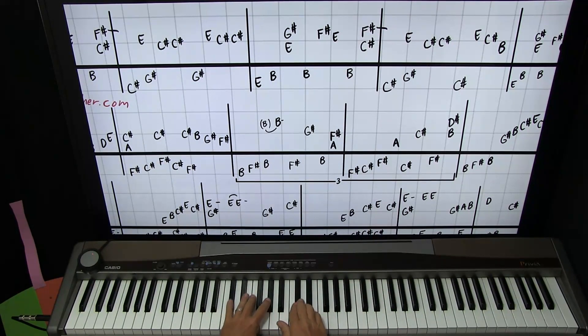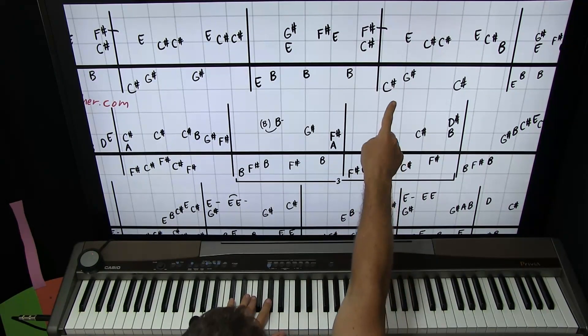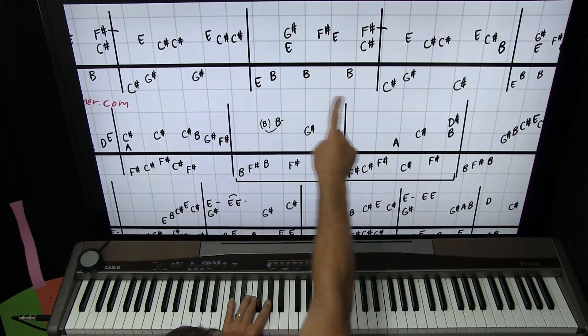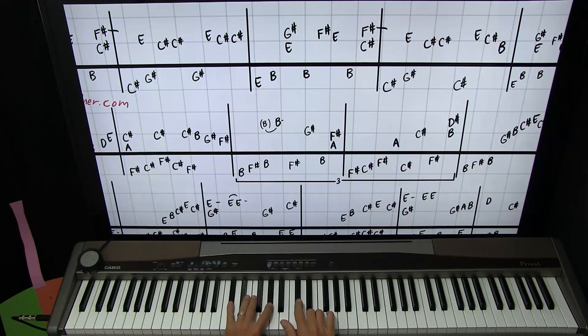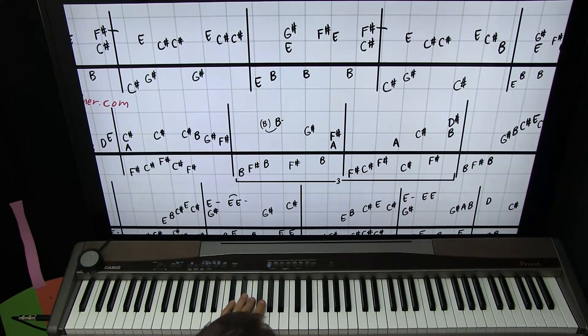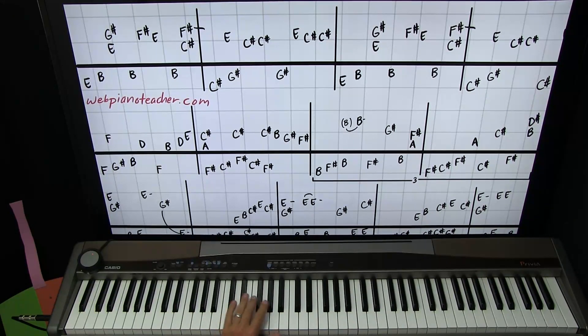Okay, and then this measure is almost like that one, except at the very end you go down to B. Then there's a C sharp on the left hand there instead of a G sharp. So from the very beginning we have...